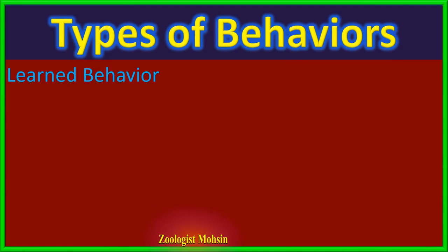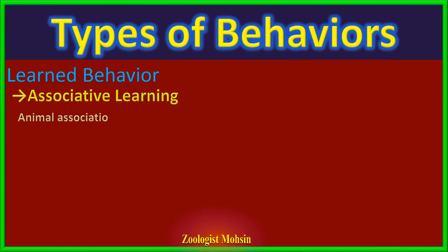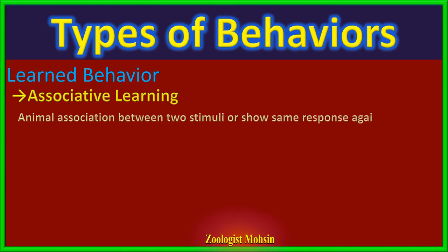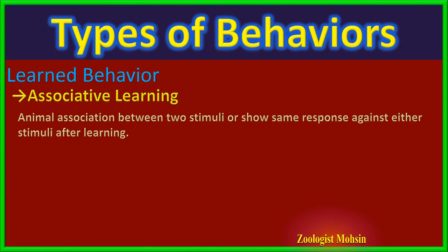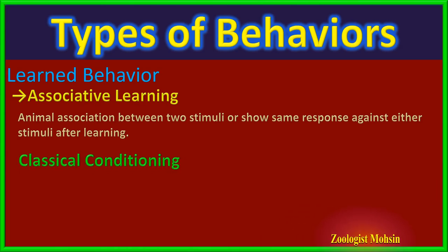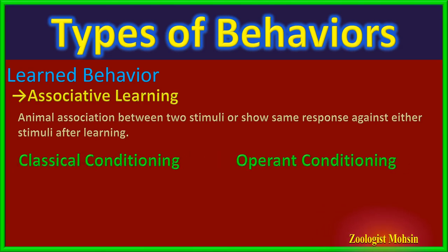When animals form associations between two stimuli and ultimately show a response to an unrelated stimulus that is linked with a related stimulus, it is termed associative learning. There are two basic types: classical conditioning and operant conditioning.